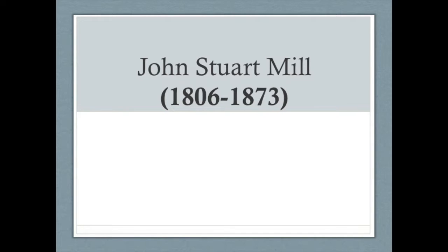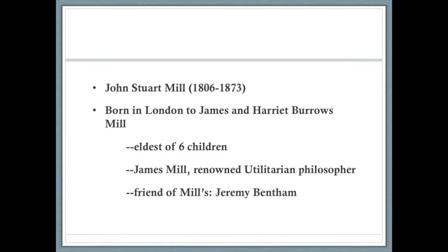Mill's dates are 1806 to 1873. He was born to James and Harriet Burroughs Mill, the oldest of six children. James Mill was a utilitarian philosopher whose best friend was Jeremy Bentham. Jeremy Bentham was definitely the more famous and more accomplished of the two, but James Mill was an accomplished author in his own right. Bentham was the big grand poobah of utilitarianism, though over time people like John Stuart Mill — more than James — modified utilitarianism and made it more reasonable.